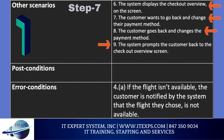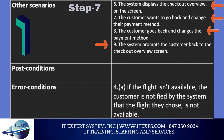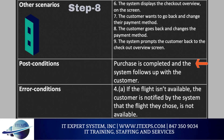For example, let's say the customer wants to change their payment method. We can say the customer proceeds to checkout, and the system displays the checkout overview on the screen, but the customer wants to go back and change their payment method. Once the customer makes the change, the system prompts the customer back to the checkout overview screen. From there, the steps would continue normally as in the main scenario.